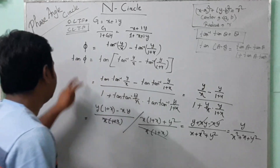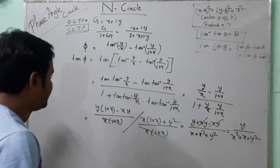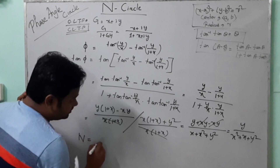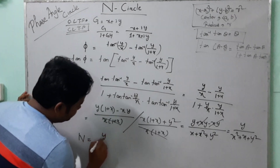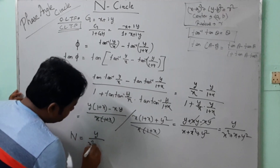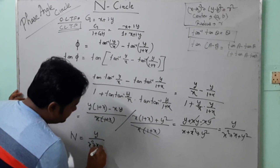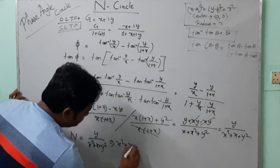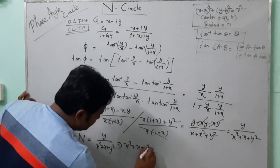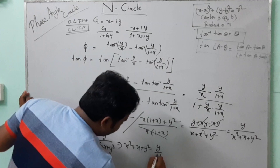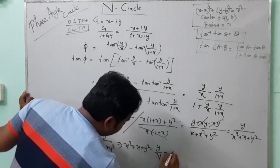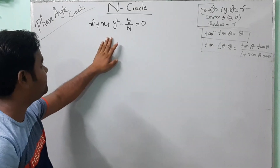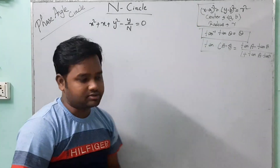If I take tan φ as capital N, then the value of N equals y divided by (x² plus x plus y²). This implies x² plus x plus y² minus y/N equals 0. This equation needs to be converted into the standard circle equation.